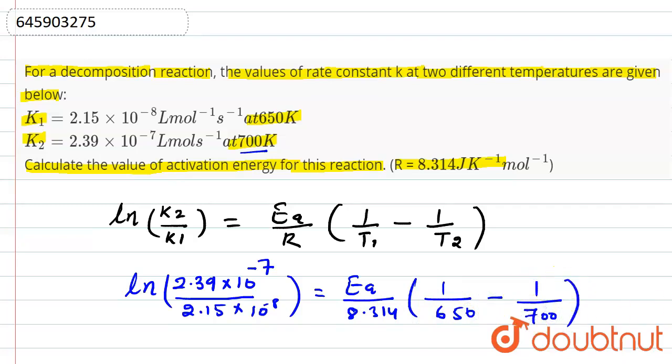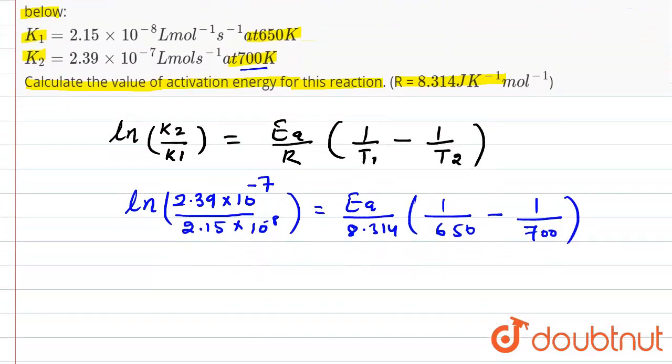Now from this equation, we have to find the value of activation energy Ea. Now if this value will get canceled out here, 10 to the power minus 1 will be left. This will go in the upside, so it will be 23.9 and that is divided by 2.15. If you divide this, then you will get answer as 11.